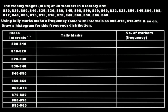We have three columns: class intervals showing the wages, tally marks, and frequency. Now we fill in the tally marks. For example, if the entry is 830, it goes into the higher class interval, that is 830 to 840, and not in the 820 to 830 interval. You can find the theoretical portion of this grouped frequency table in the description box below.